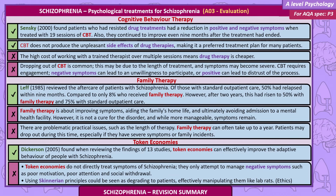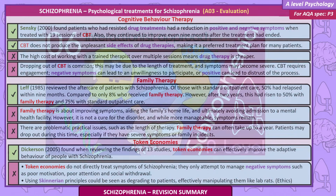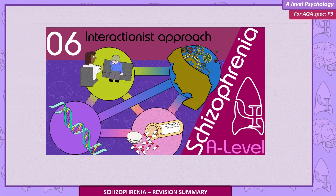Token economy evaluation: Dickerson, reviewing 13 studies, found token economies can effectively improve the adaptive behaviour of people with schizophrenia. However, token economies do not directly treat symptoms — they only attempt to manage negative symptoms such as poor motivation, poor attention and social withdrawal. Using Skinnerian principles could also be seen as degrading to patients, effectively manipulating them like lab rats — raising ethical concerns.